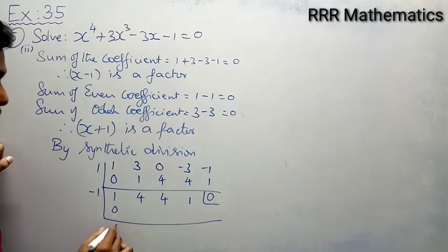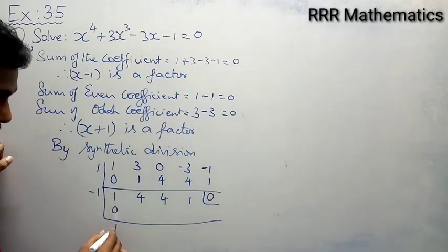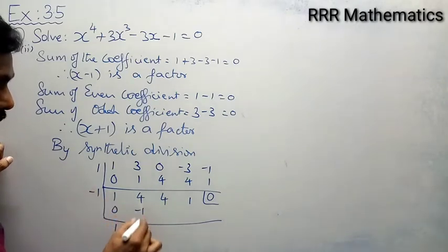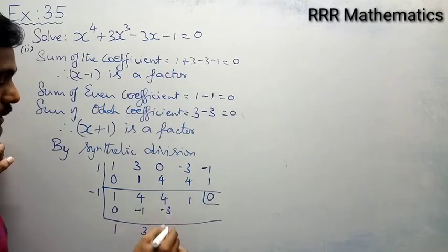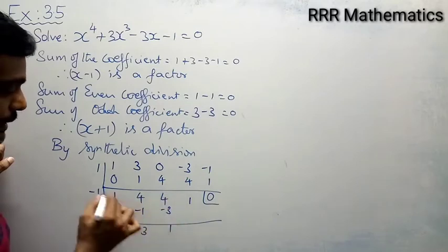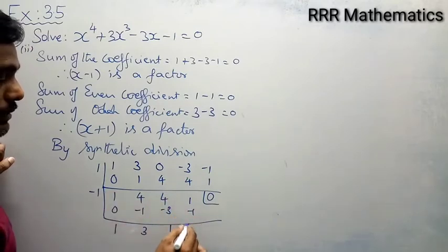Putting -1: bring down 0, then 1 — add, multiply gives -1 — add, then 3 — multiply gives -3 — then 1 — add. The result is 0. So x - 1 and x + 1 are confirmed as factors.